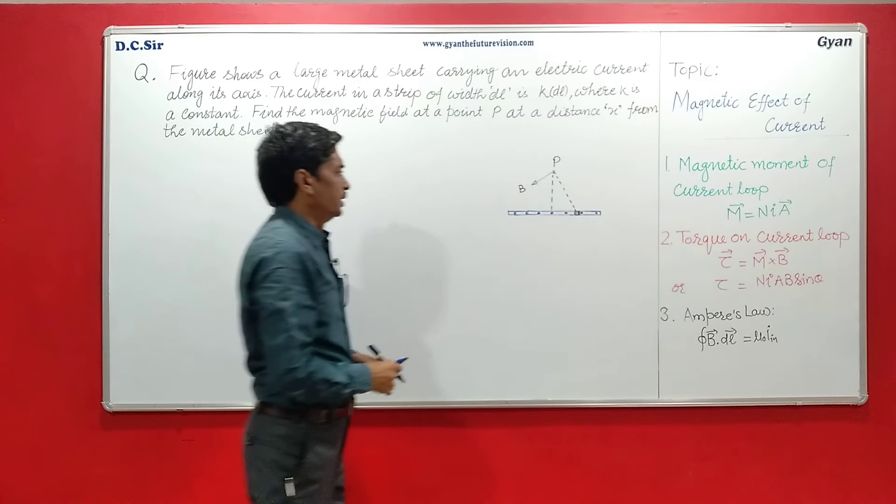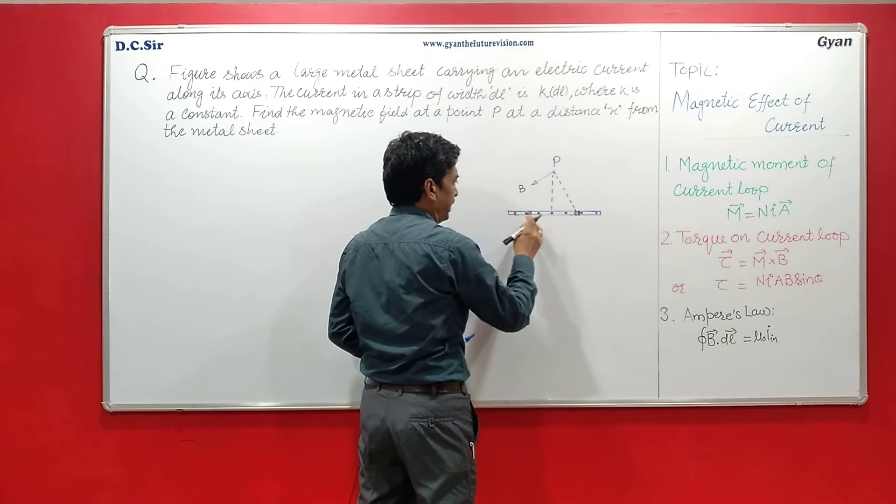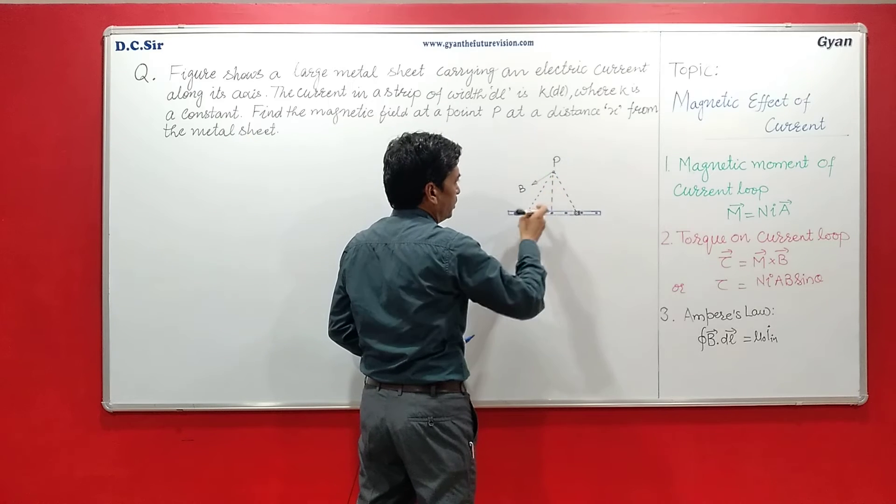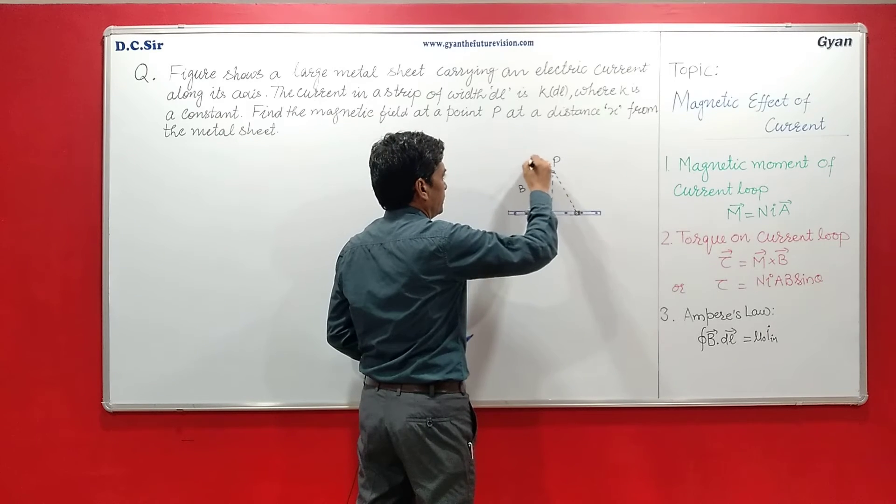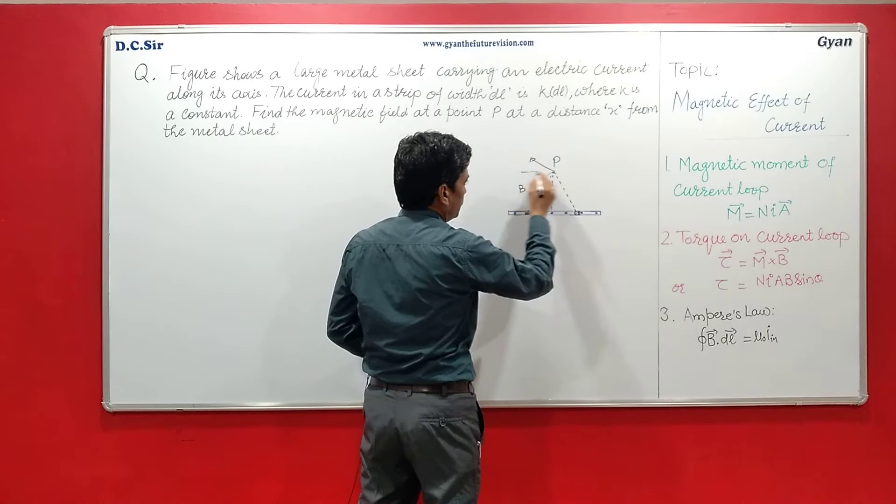Now similarly take the element, it is also like a conductor. The magnetic field of this element is perpendicular to this line, that is this way. So the resultant of these two magnetic fields is parallel to the sheet.